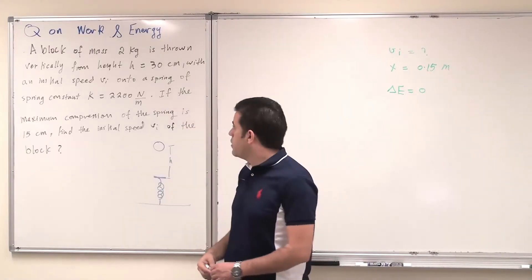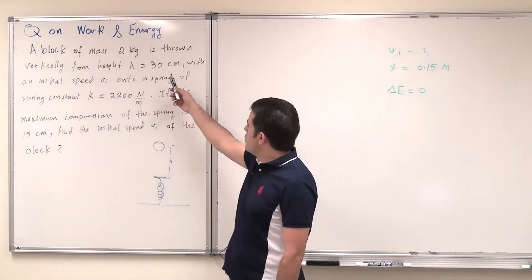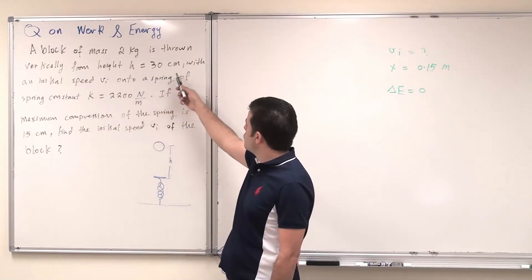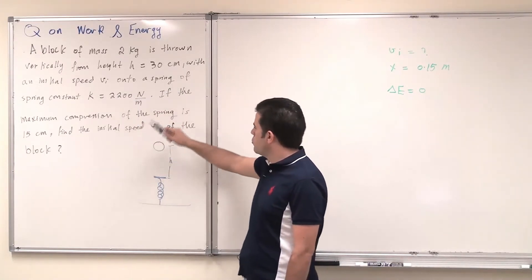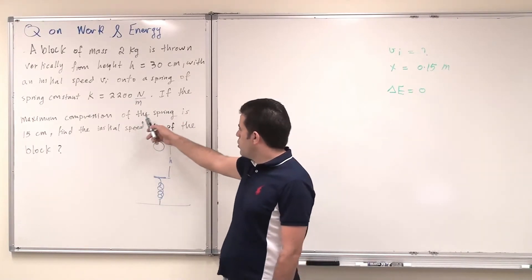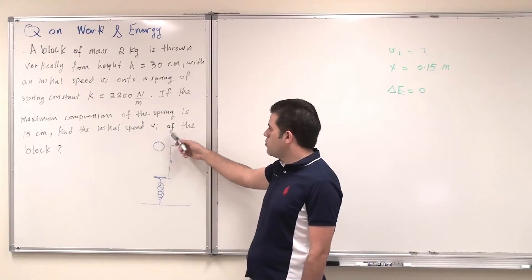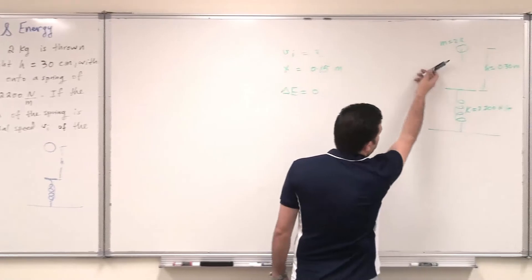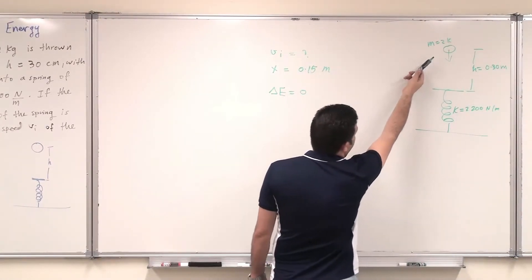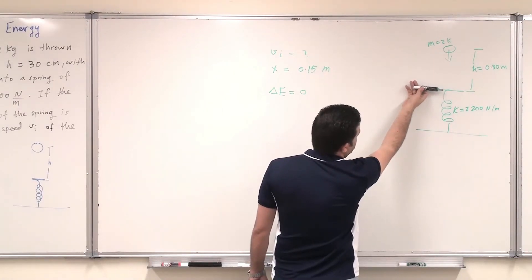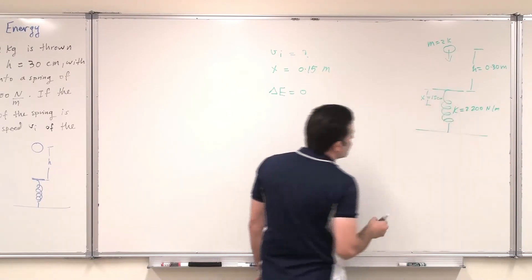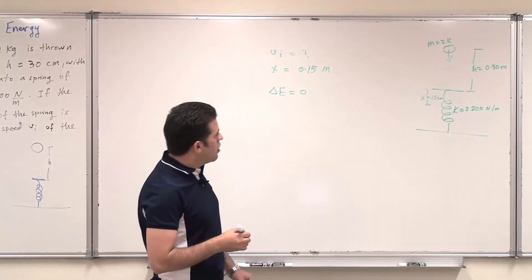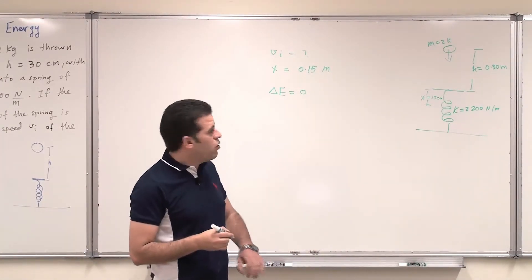Assalamu alaikum. This question is on work and energy. A block of mass 2 kilograms is thrown vertically down from height h equal to 30 centimeters with an initial speed v initial onto a spring of spring constant k equal to 2200 newtons per meter. If the maximum compression of the spring is 15 centimeters, find the initial speed of the block. Since all the forces are conservative, I can utilize the conservation of mechanical energy.